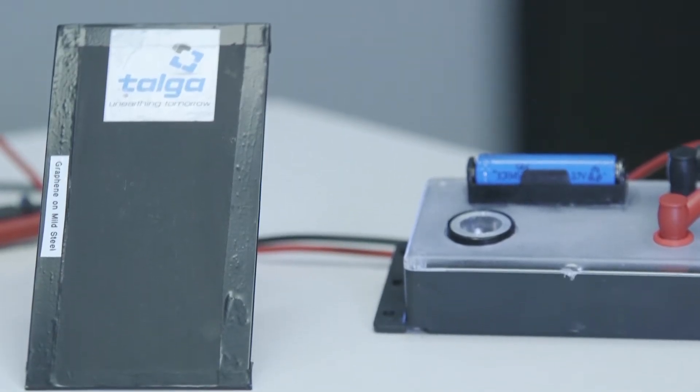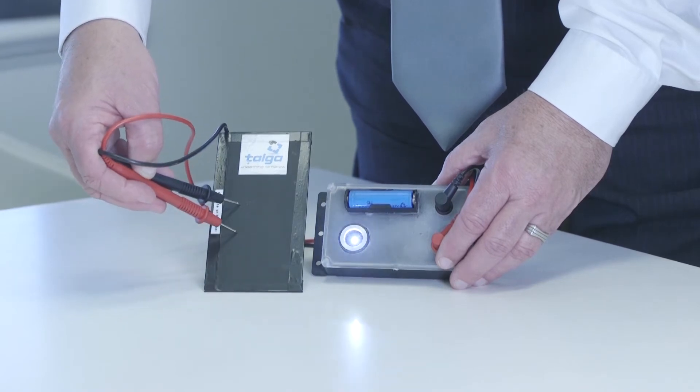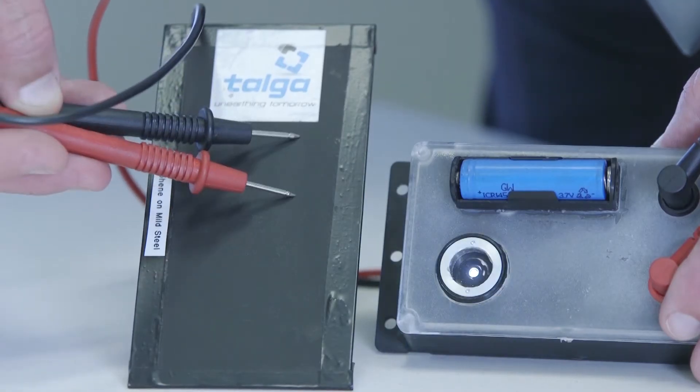Graphene works as a barrier against corrosion because it's not only the most conductive material on earth, but it's also impermeable to gases and liquids.